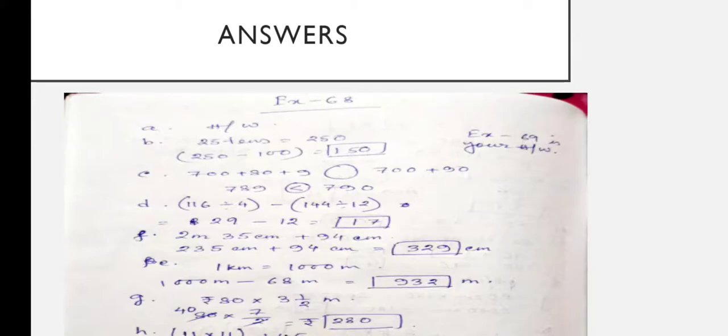Next: 700 plus 80 plus 9 — put greater than or less than. Here 790 is greater than 789, so the answer is greater than.